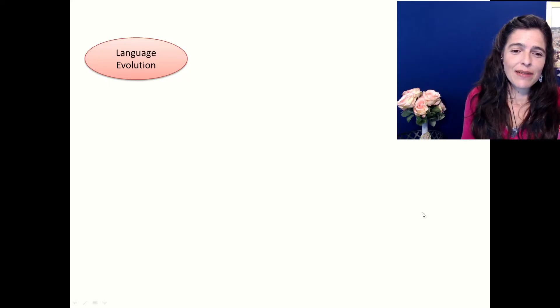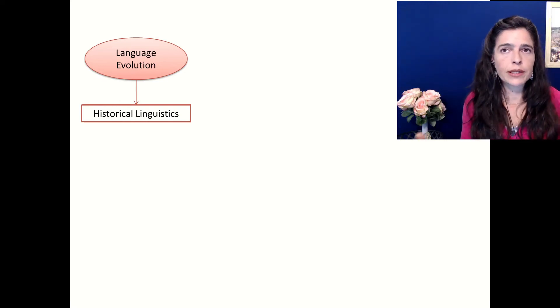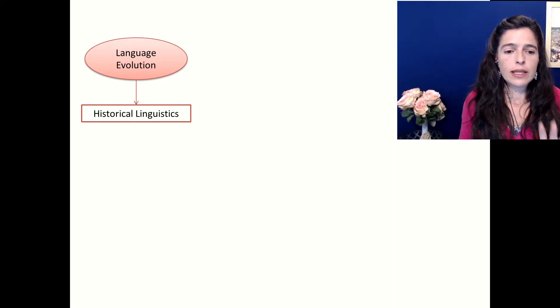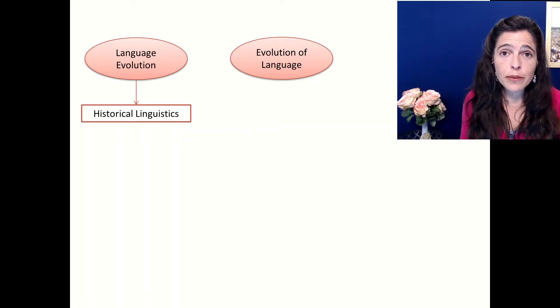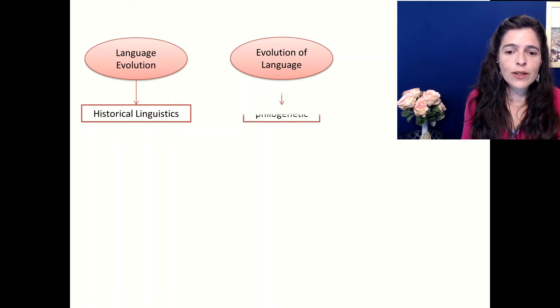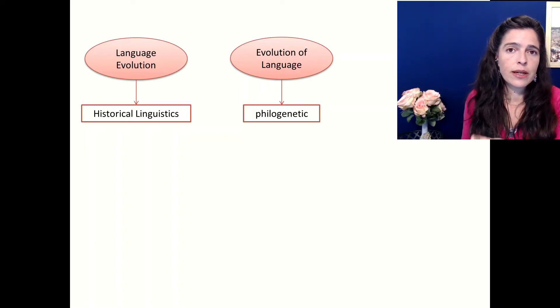So that's what Darwin has to say about biology and language. Before moving on, we need to define some terms. There's a confusion between language evolution — which is basically historical linguistics, how each language evolved, like French from Old French, English from Old English and Germanic — and the evolution of language as a capacity of our species, which is much more complex.